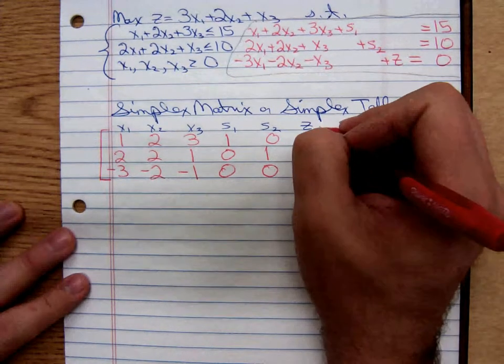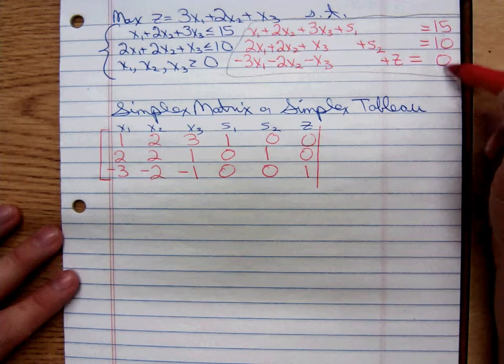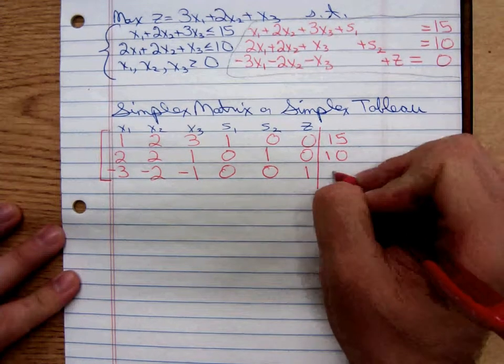I'm then going to draw a vertical line to indicate I'm moving to the other side of the equal sign. And my last column, 15, 10, and 0.